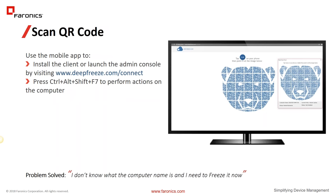There is also a mobile app. It will allow you to scan a QR code on a machine and allow you to install a client on that machine or load the admin console — automatically entering your password in the admin console. Or if you're trying to identify a computer, you hit Control-Alt-Shift-F7, scan the QR code, and that machine will automatically show up in your mobile device so you can freeze, thaw, or do whatever else you need.